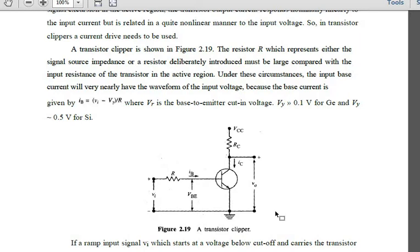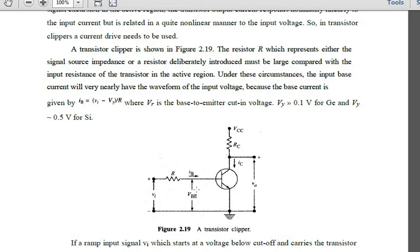Let me explain once more. The resistor value must be large compared to the transistor's input resistance for the transistor to operate in the active region. Under these circumstances, the base current will nearly follow the waveform of the input voltage, because the base current I = V/R, where V is the input voltage minus the base-to-emitter voltage.